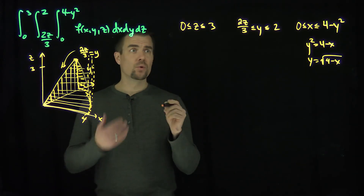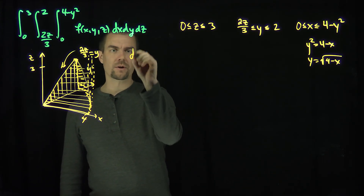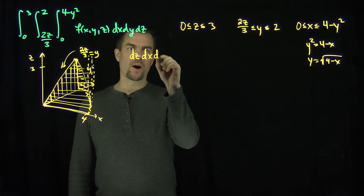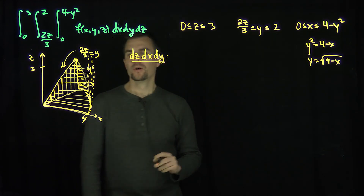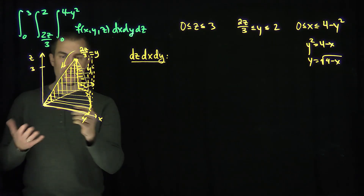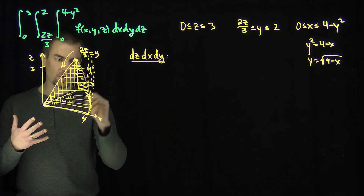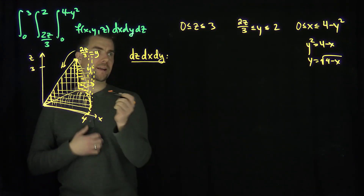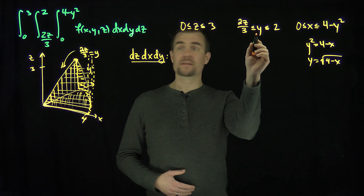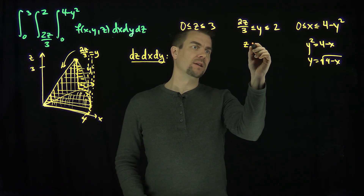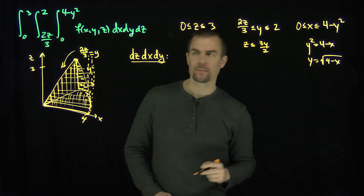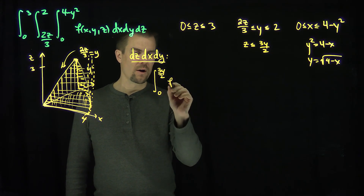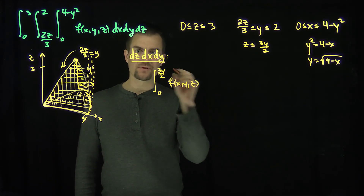Now I want to change the limits of integration. Let's consider the order dz dx dy. In this region, z is always in the first octant, so z starts at z equals 0 and goes up to the plane defined by y — namely, z is less than or equal to 3y/2. So our integral starts with an integral from 0 to 3y/2 for the z range.